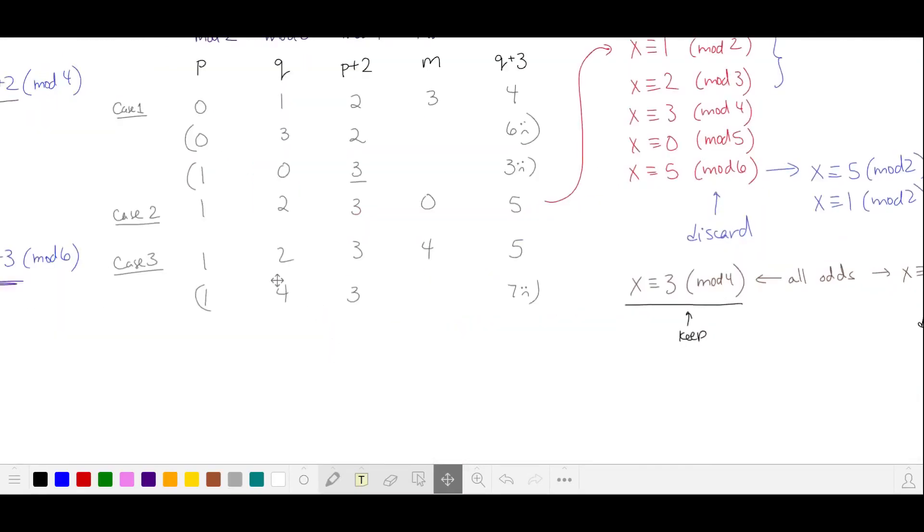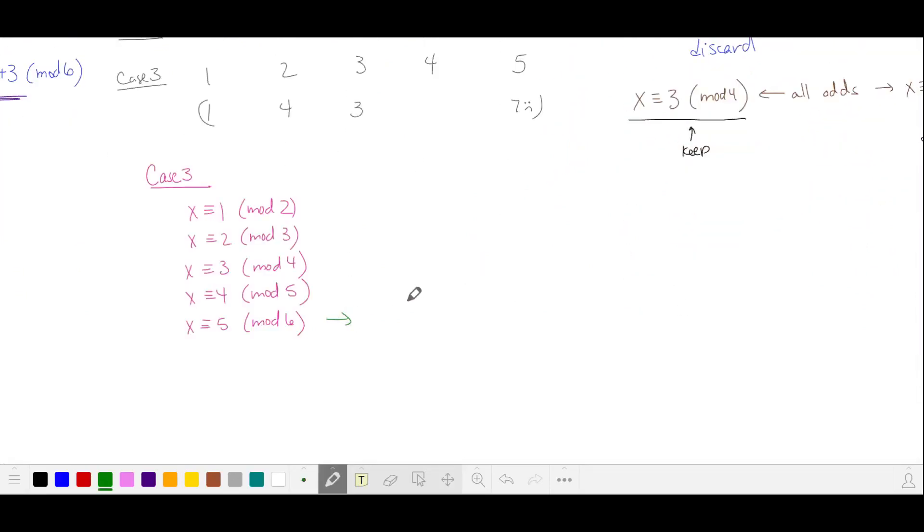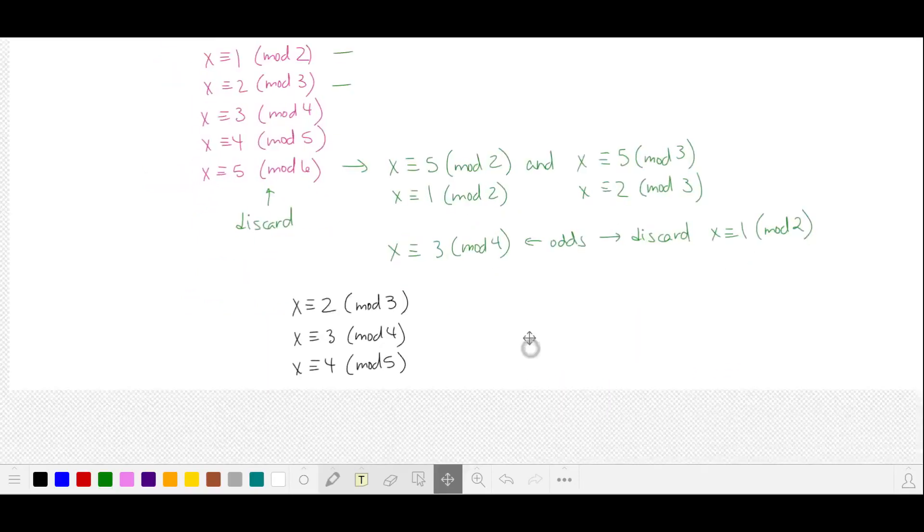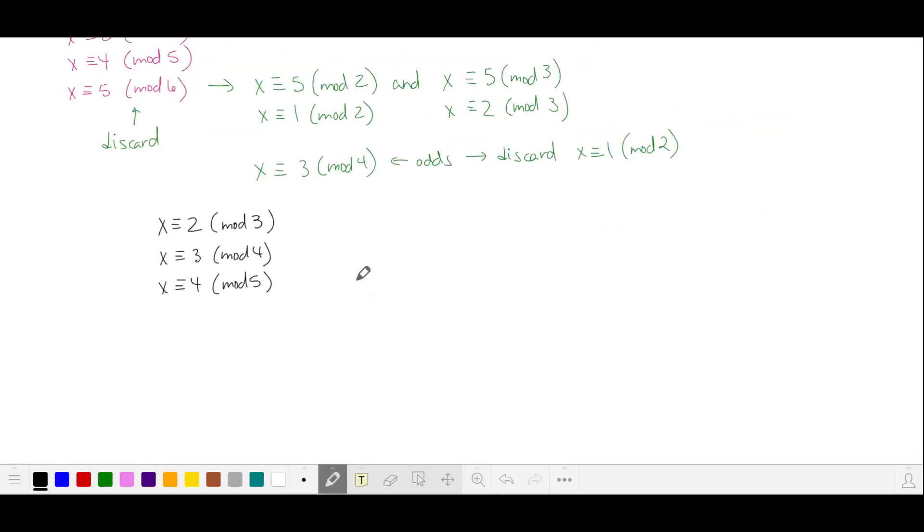Now let's check case three. We take a look at five mod six. That means x is five mod two and five mod three. And when we simplify, we find that these are already covered. So we can discard this additional restriction. We'll take a look at three in mod four. These are all going to be odds. So we can discard the additional restriction that x be odd. And we're left with the three remaining co-prime mods.